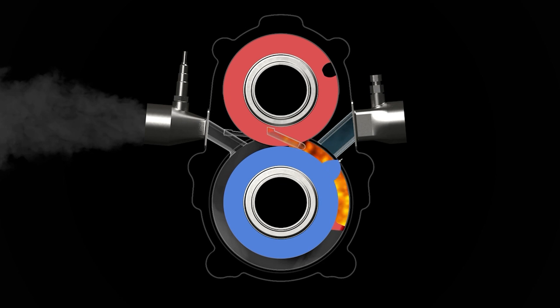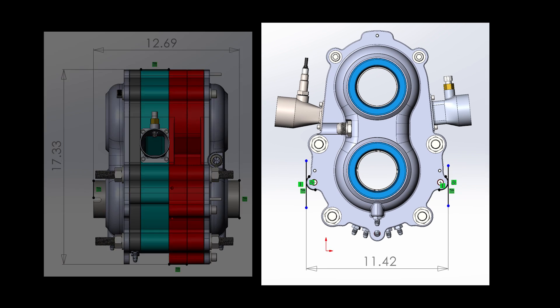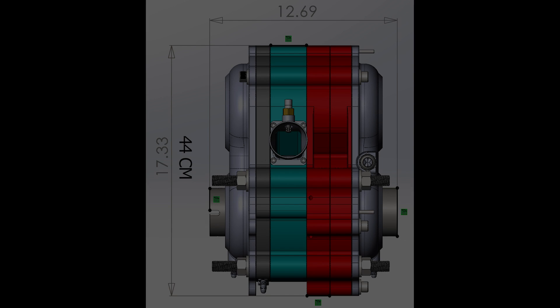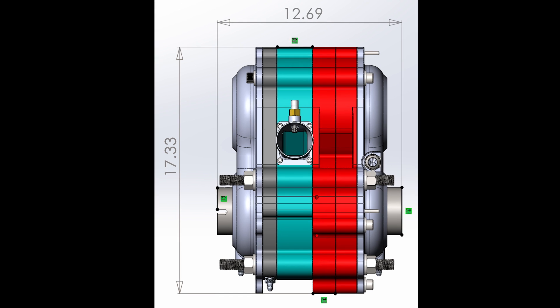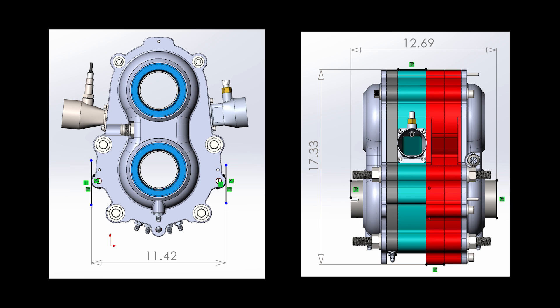Anyways on to size. So how big will the motor be? Well we now know that too. We have two diagrams that show us exactly how big the motor will be. From the front view the engine will have a width of 11.42 inches or 29 centimeters and a height of 17.33 inches or 44 centimeters. When viewed from the side profile the engine will have a width of 12.69 inches or 32.2 centimeters. So overall it appears that the engine won't be very big. Which is great news.